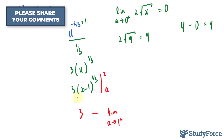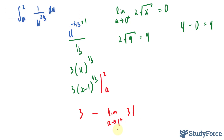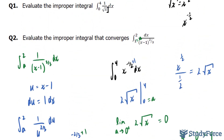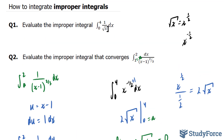Let's find the limit. Substituting one into x gives one minus one, which is zero. Zero to the power of one over three is zero, times three is zero. So three minus zero equals three. Therefore, the integral of this function between one and two is equal to three. And that is how to integrate improper integrals.